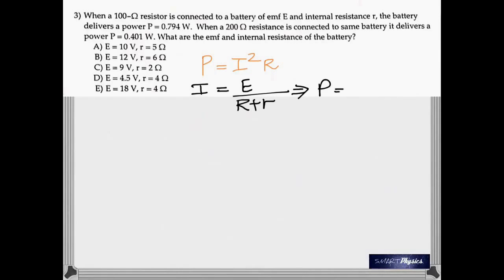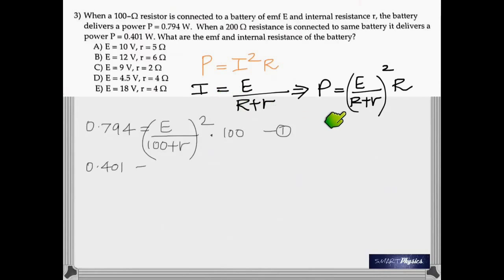Power is given by I squared R. And I, as explained before, is EMF by the total resistance. Therefore, on substituting for I squared, you get this.